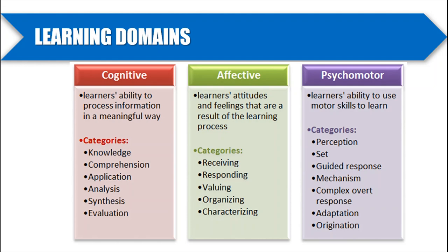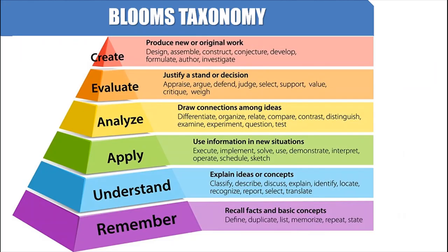You can see the different categories under each domain — feel free to pause the video and read through them. Bloom's Taxonomy is the next area we need to explore when writing objectives. It looks somewhat similar to the depth of knowledge but there are differences. It structures the levels of students' thinking into six common words: remember, understand, apply, analyze, evaluate, and create.